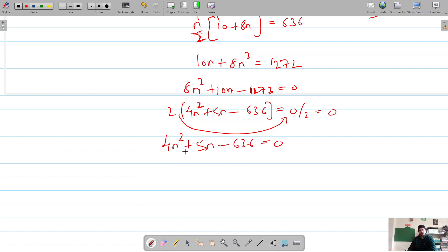And we know how to solve the quadratic equation. So a is 4, b is 5, and c is minus 636. So a into c gives 4 into minus 636, which is equal to 636 into 4 is 2544. It's negative 2544.